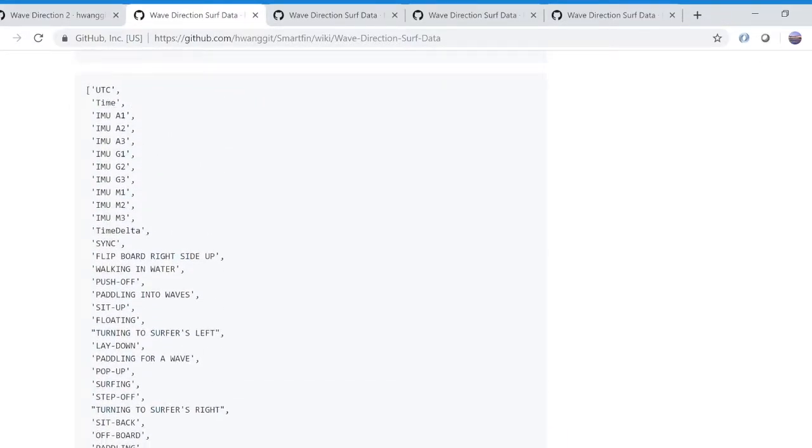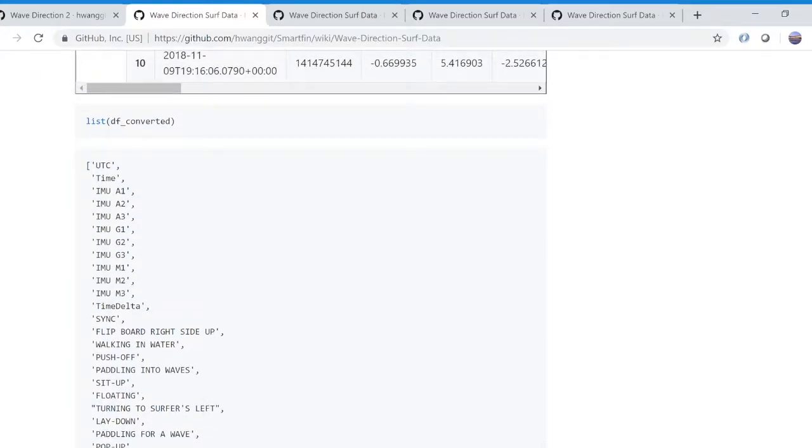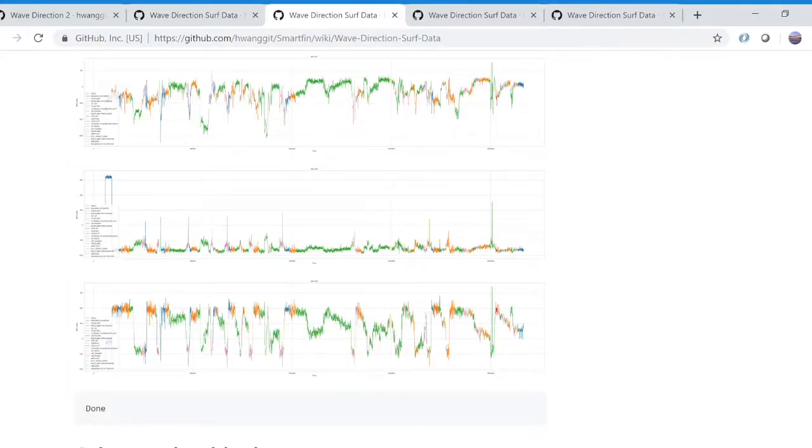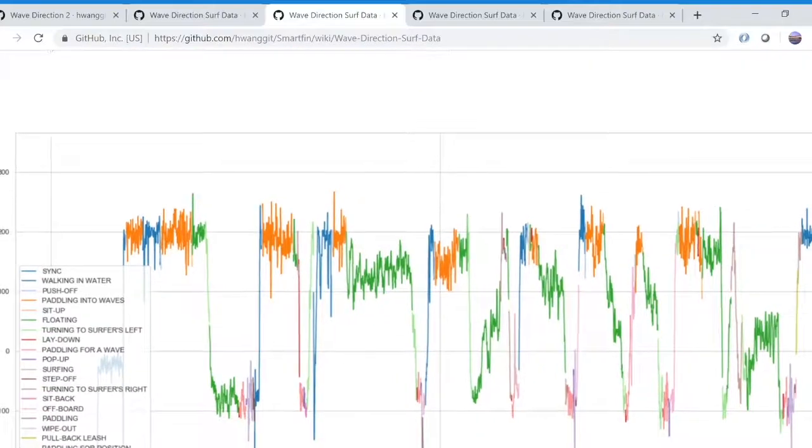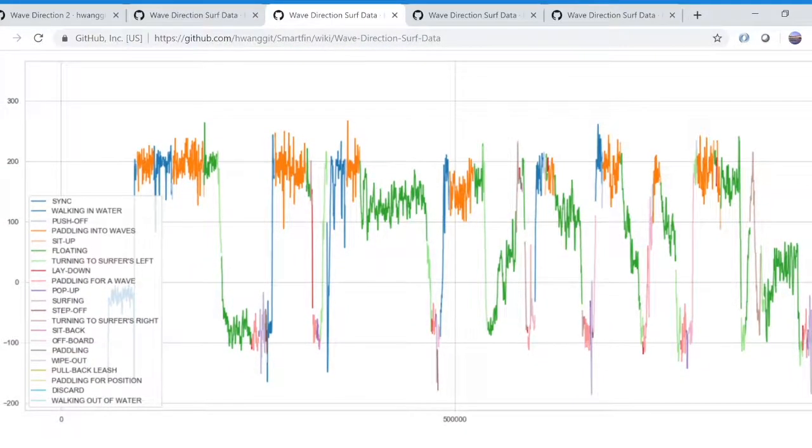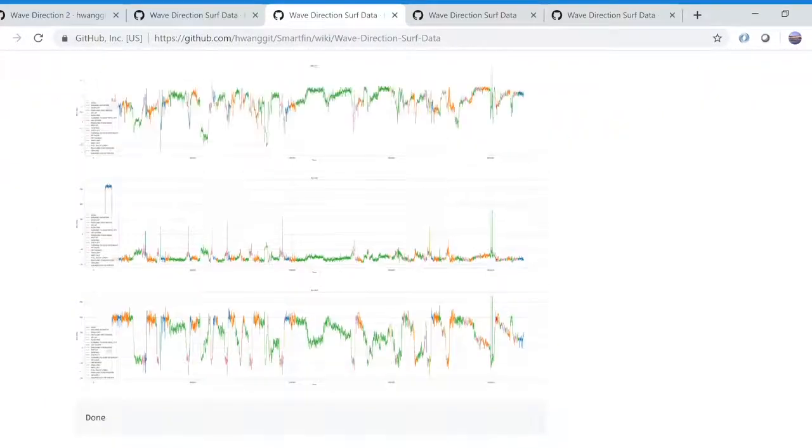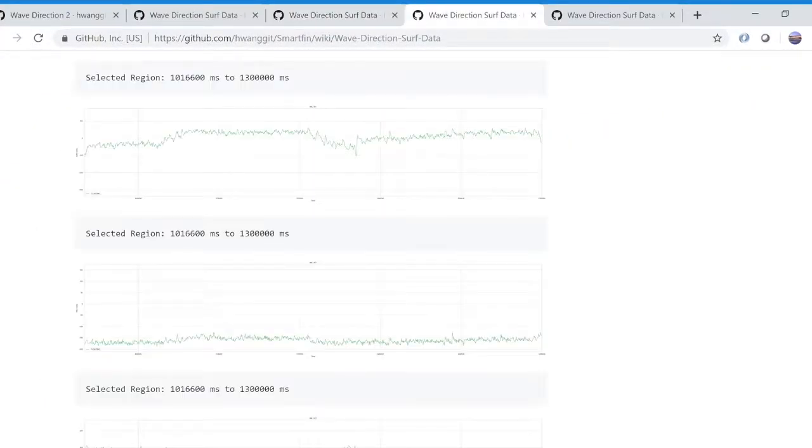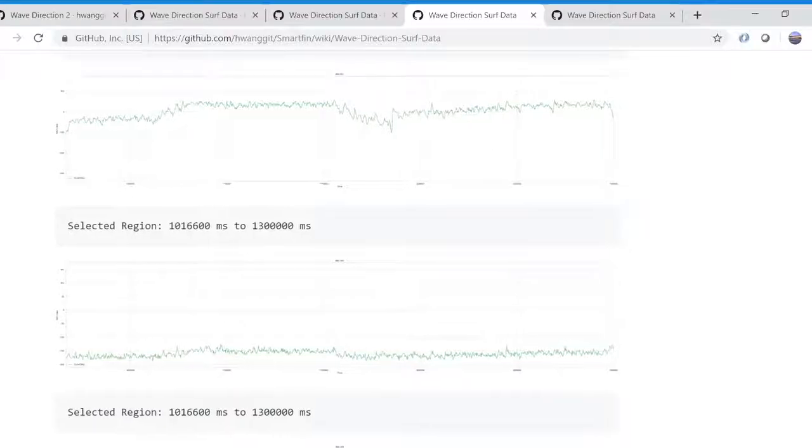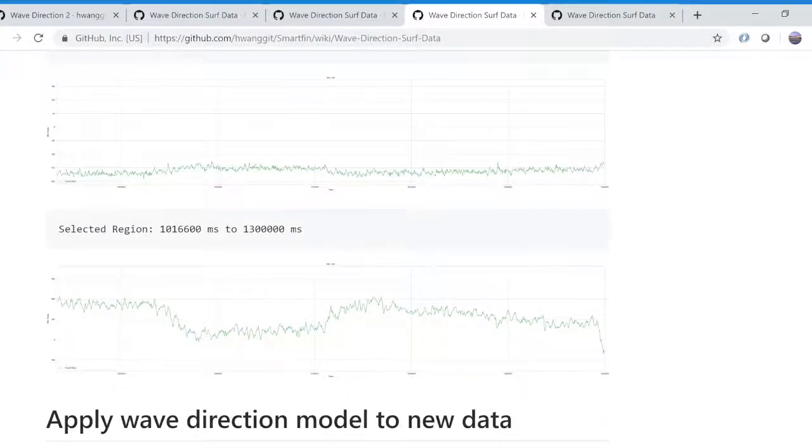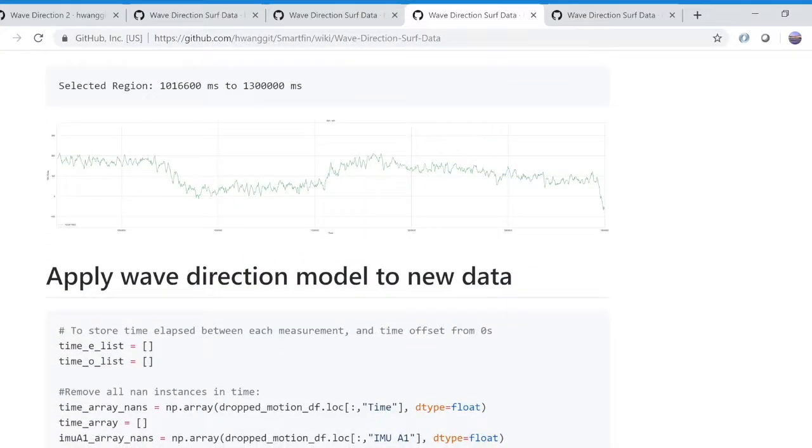Extrapolating further, I tested my model on real surf data using Python machine learning models to label different surf behaviors such as floating, paddling, wiping out, and more. Then, I filtered out the data when the surfboard was floating on the water and applied my model to this selection. My results were a heading of 195 degrees southwest.